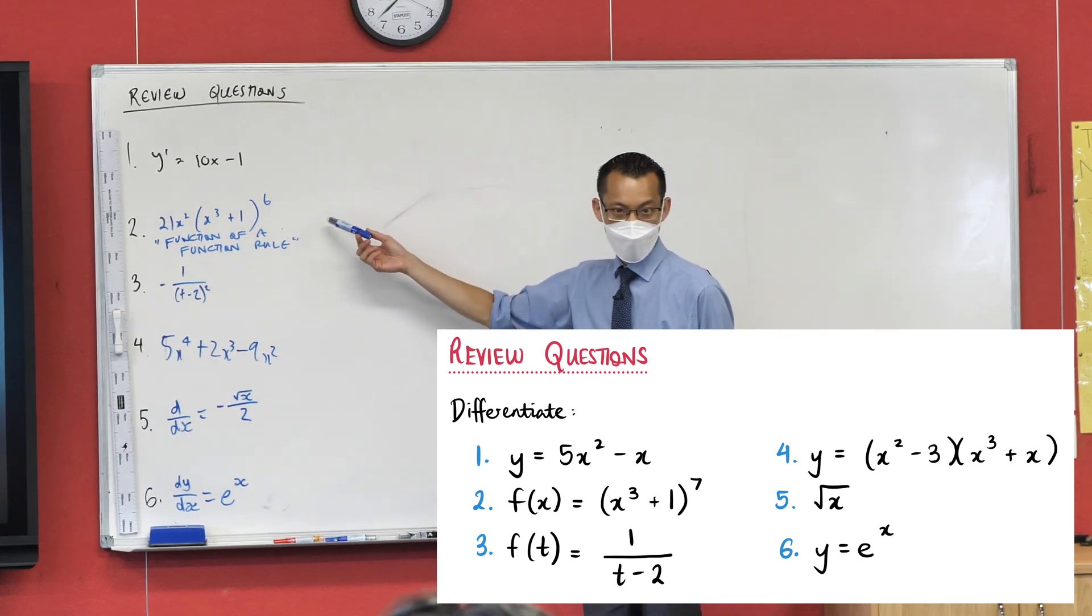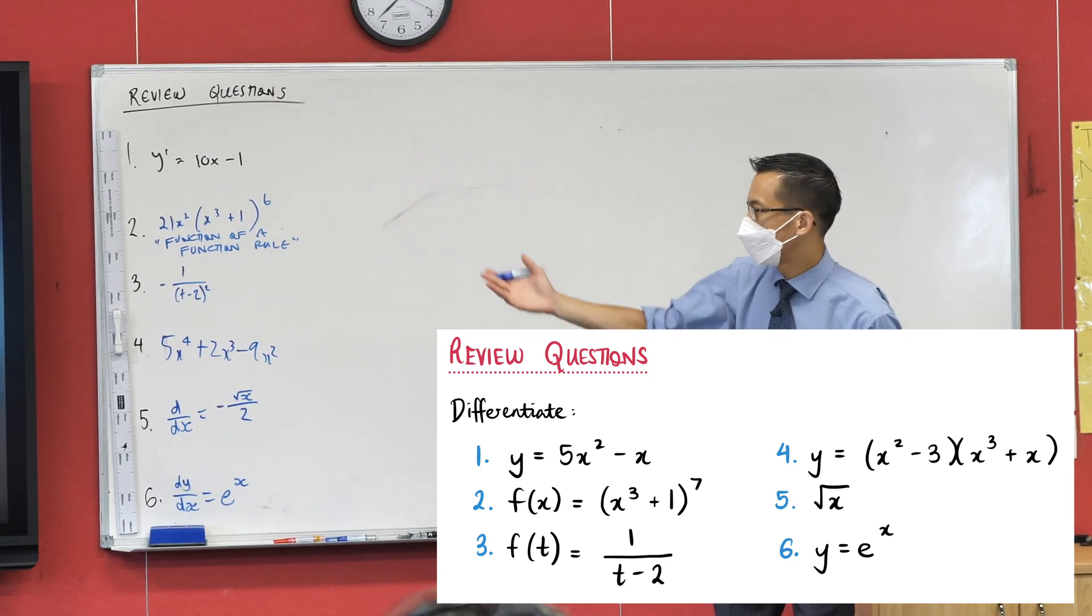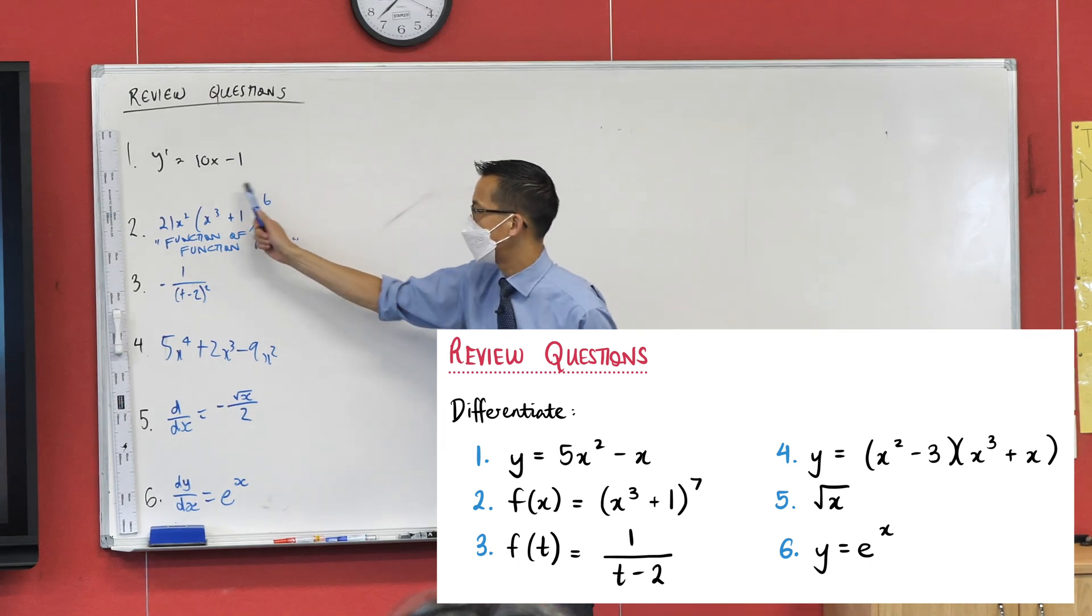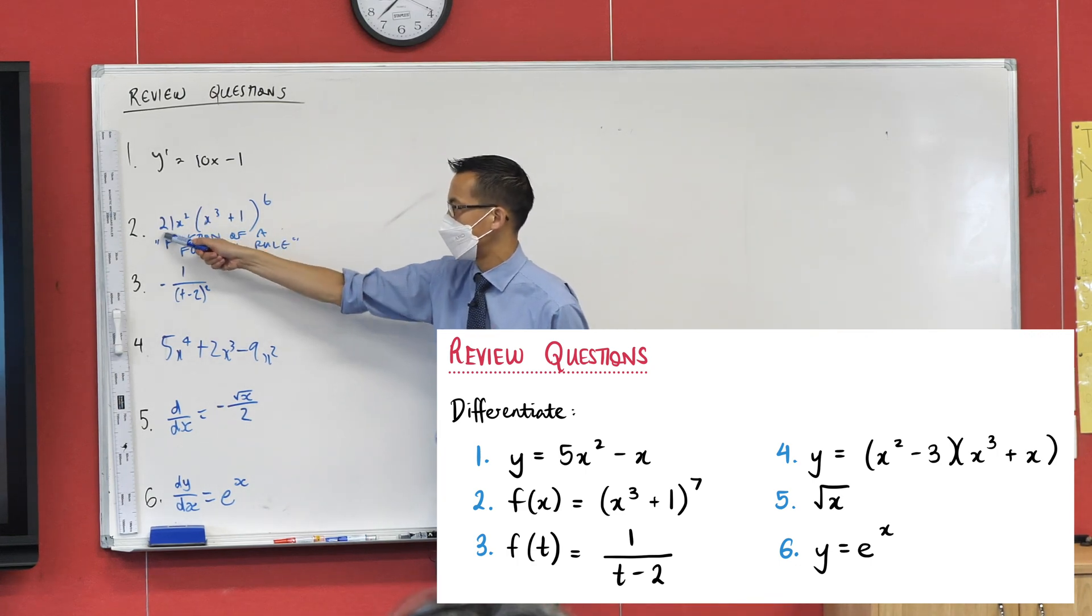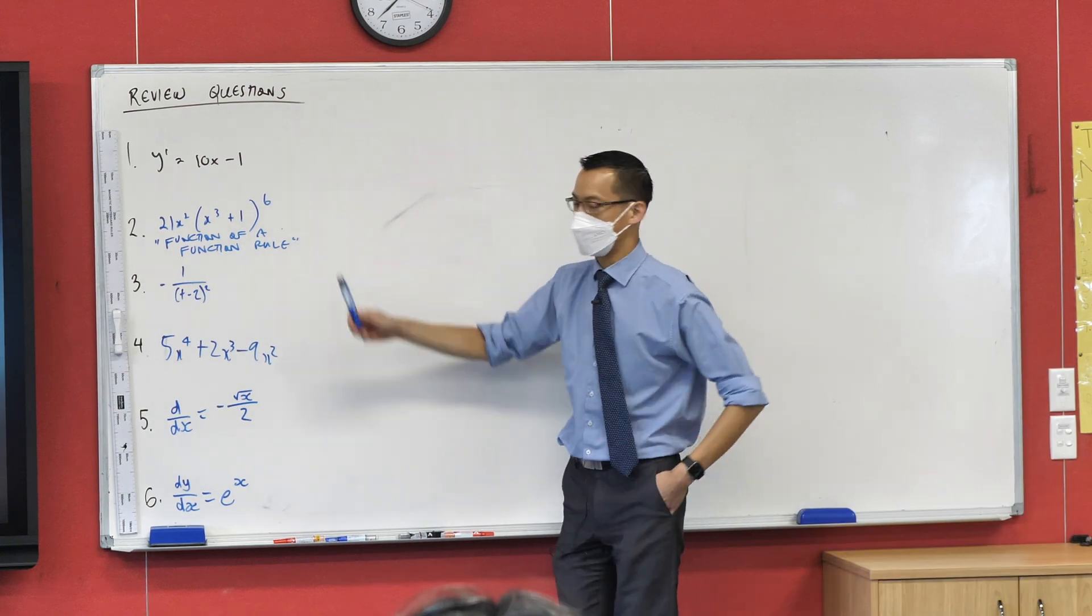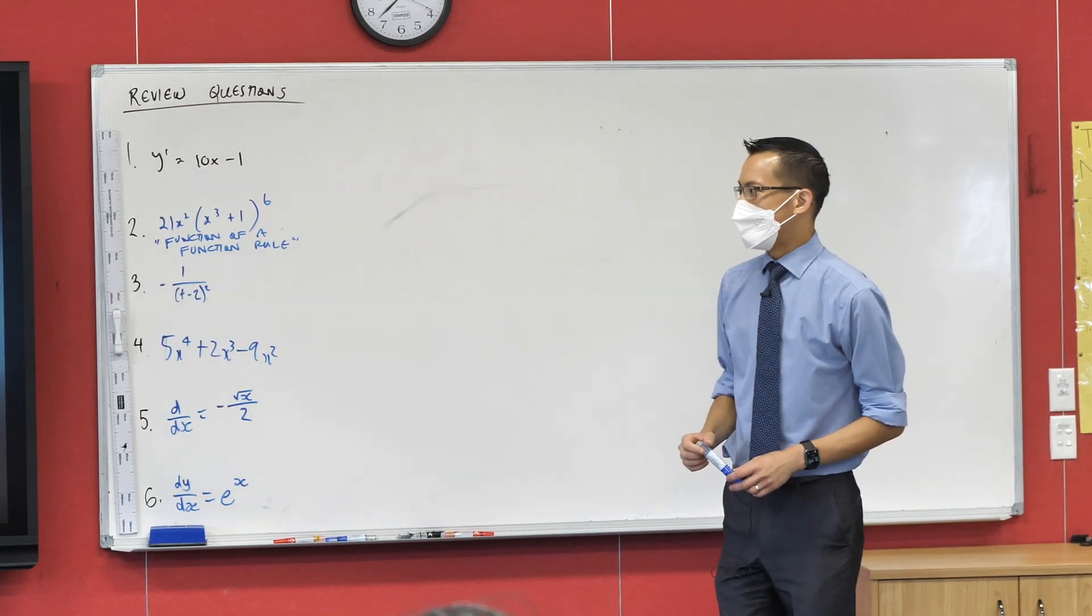Does it look good? Does that look like the derivative for question two? Happy? Seven times, this is going to be 3x squared. So seven times three gives you the 21. Reduce the power. I'm also pretty happy with that.